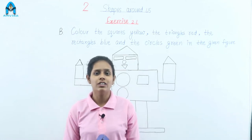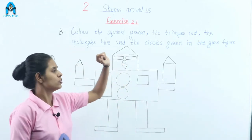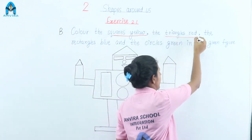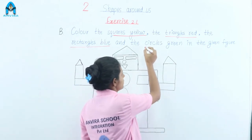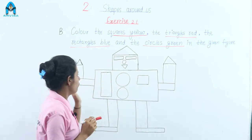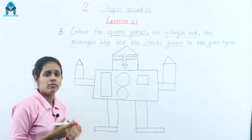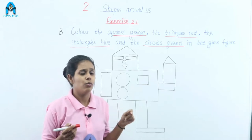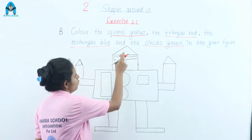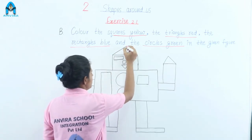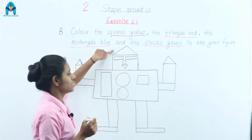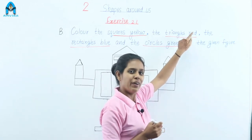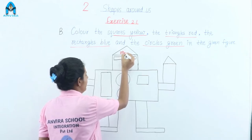Now, question B. Read the question: Color the squares yellow, the triangles red, the rectangles blue, and the circles green. In this question, we see a figure made with different shapes. We have to identify the shapes and fill in the colors. Starting from the top — this is a triangle, so we fill color red in the triangle.